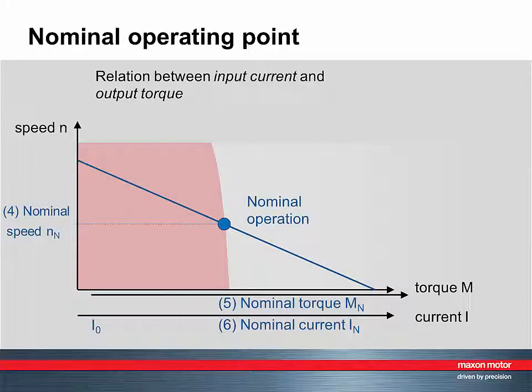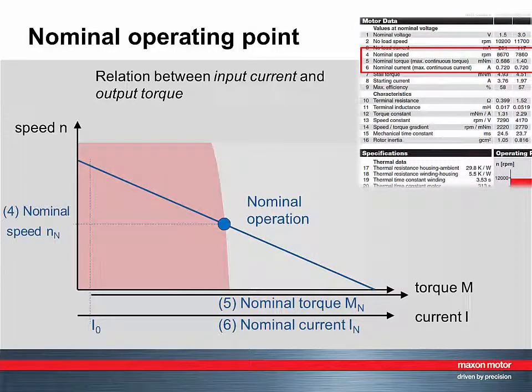The second operating point at nominal voltage is called the nominal operating point, and it is characterized by three parameters. The nominal current or maximum continuous current. This is the maximum current that the motor can thermally withstand without overheating of the winding at standard conditions.